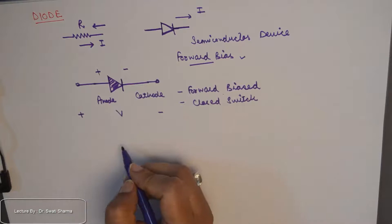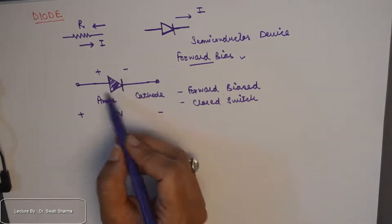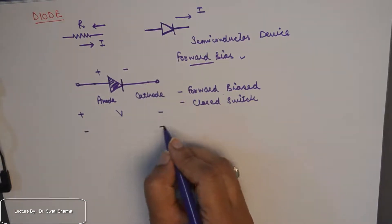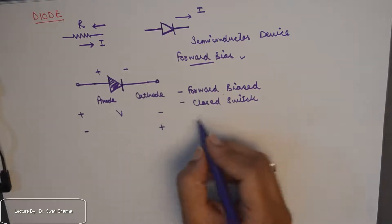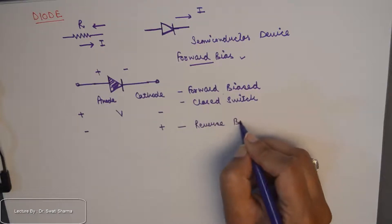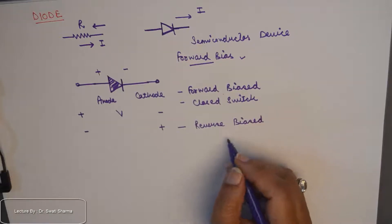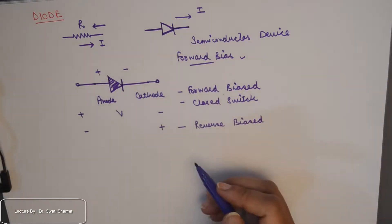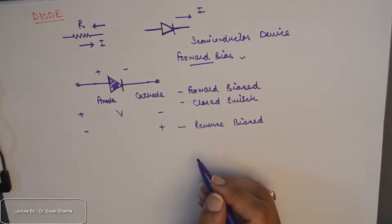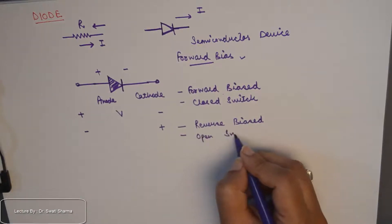On the other hand, if the battery is connected such that the anode of the diode is connected to the negative terminal and the cathode is connected to the positive terminal in the external circuit, the diode is said to be reverse biased. When reverse biased, the diode offers infinite resistance to the flow of current and hence works like an open switch.